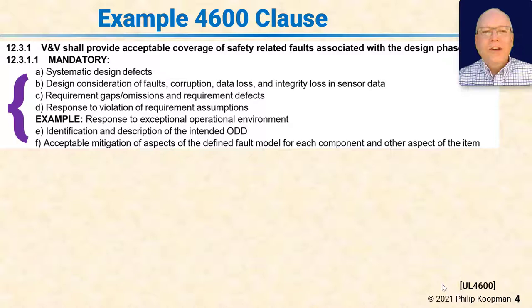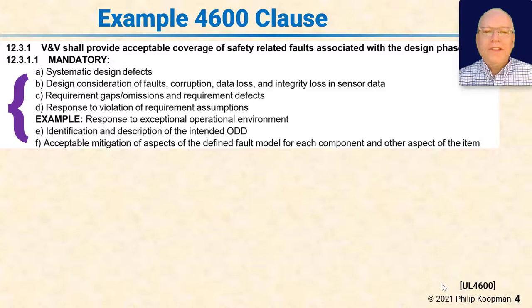Prompt element E means there might be design defects having to do with the identification and description of the intended ODD — in other words, your description of the ODD might be incorrect. All mandatory prompt elements have to be addressed in your safety case. That does not mean you need a technical mitigation; it just means the safety case has to say risks and hazards introduced by these are mitigated either because they can't happen, or you have a technical measure, or a non-technical measure.